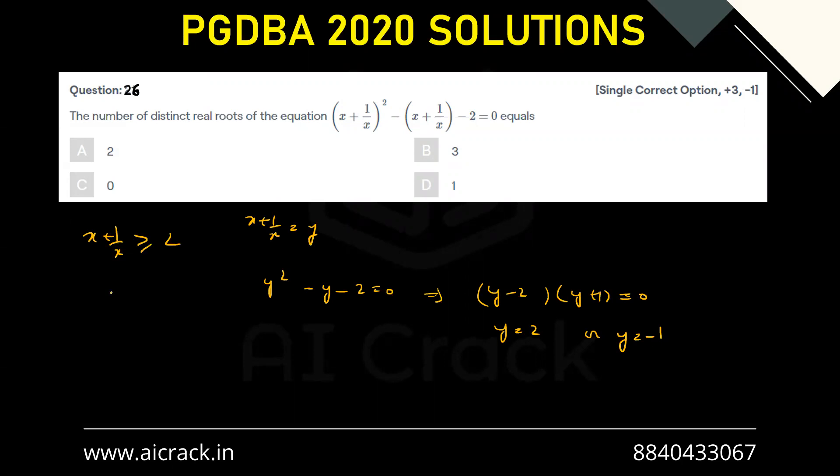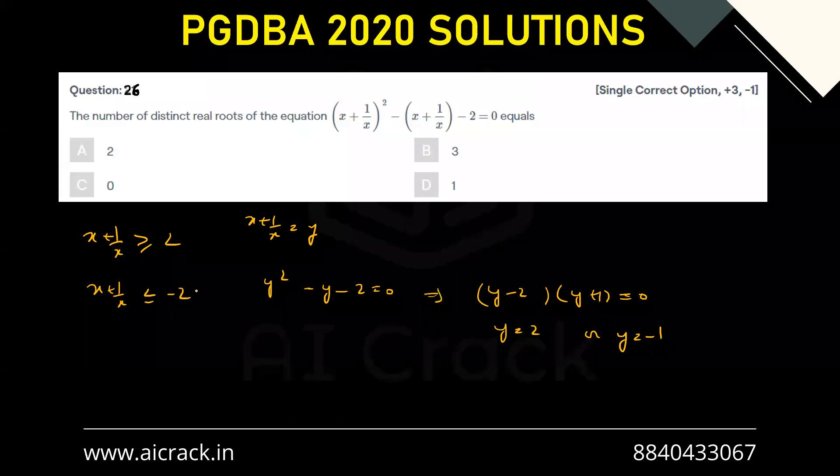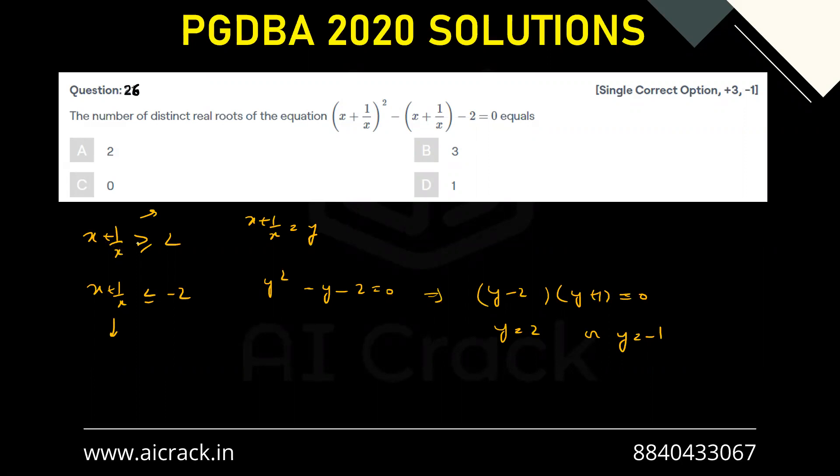Or x + 1/x is less than or equal to -2. This is for positive numbers, this is for negative numbers. For positive numbers, x + 1/x is always greater than or equal to 2, and x + 1/x is always less than or equal to -2 for negative numbers.